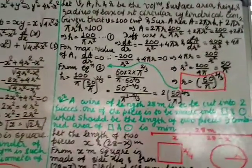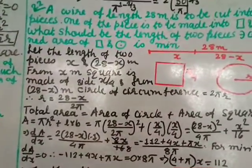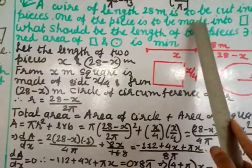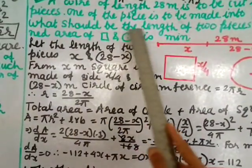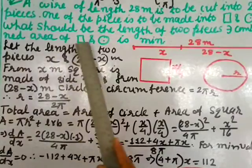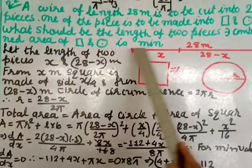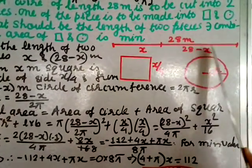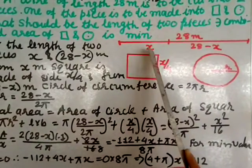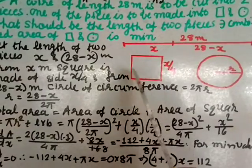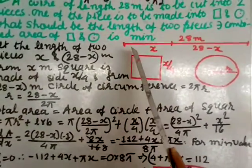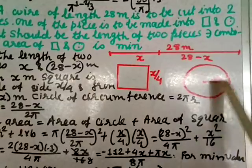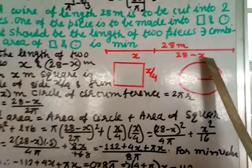Question 22: A wire of length 28 metres is to be cut into two pieces. One piece is to be made into a square and the other into a circle. What should be the lengths of the two pieces so that the combined area of the square and circle is minimum? Suppose we cut one piece of length x, so the remaining is 28 minus x.